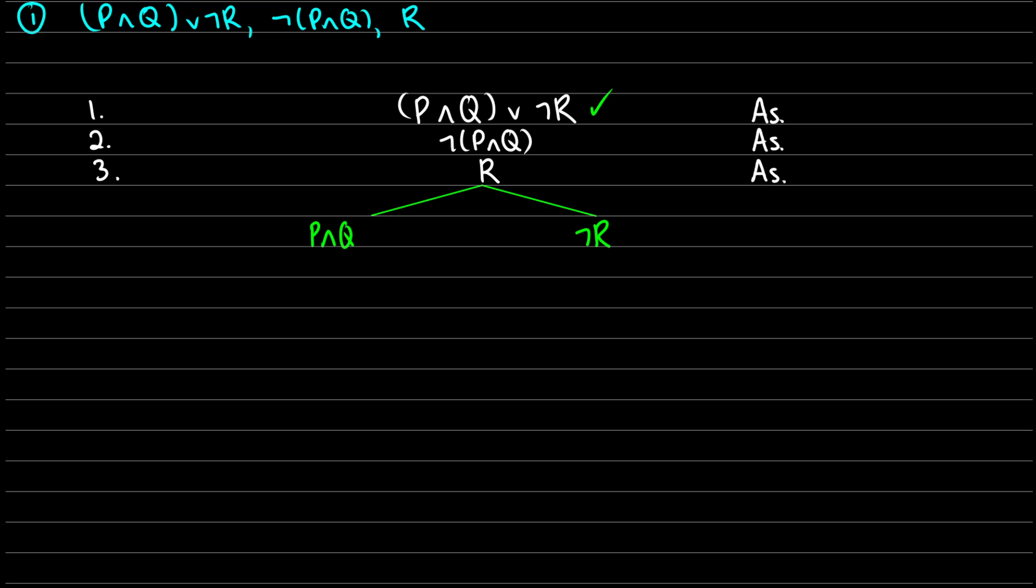So that one is dealt with. Remember the different branches mean or. So we can justify this, we call this line four, and we say from one we did or decomposition. Now in line five and line six I have P∧Q in my left branch, so I want to take care of this. I want to separate this into P and Q. So from line four in both of those we did and decomposition.